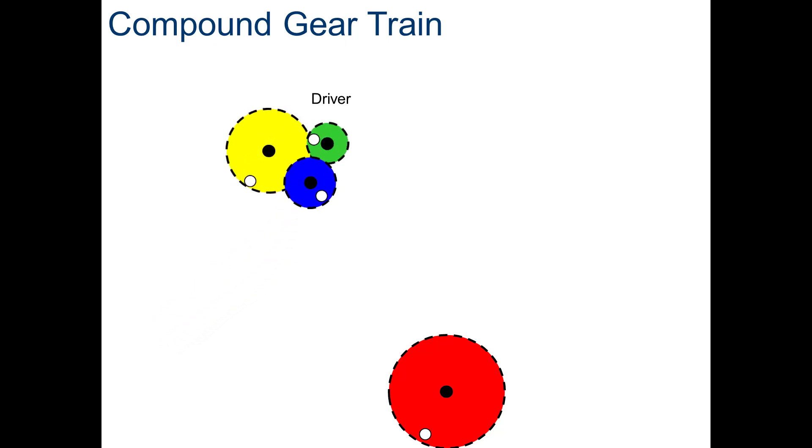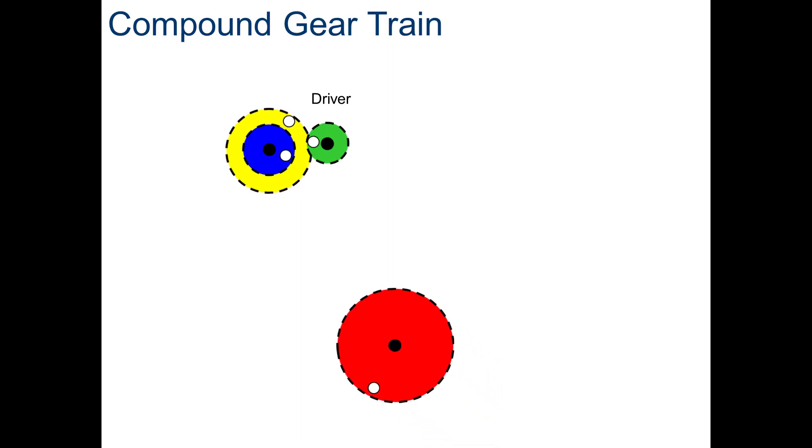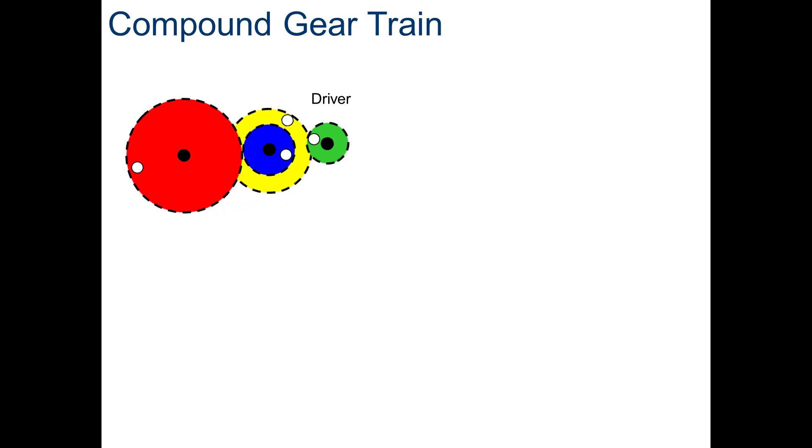Now, we put the blue gear on the yellow gear. And note, they turn at exactly the same angular velocity or revolutions per minute. Now, we mate the red gear with the blue gear, and you'll notice the red gear turns even slower yet. So, you can see visually the gear ratio reduction that we gain by going to a compound gear train.